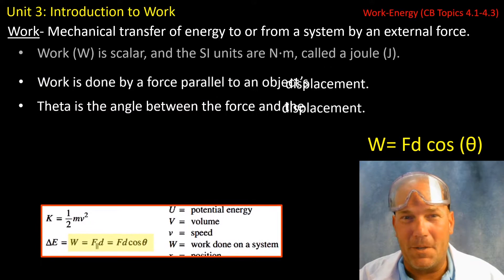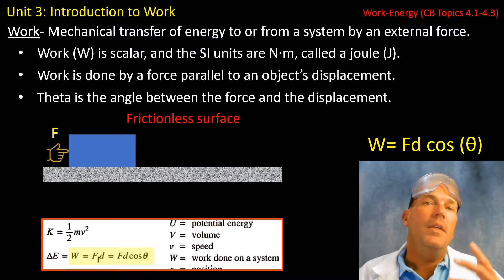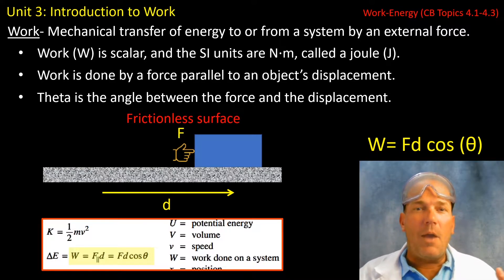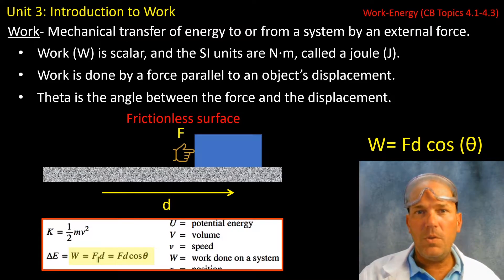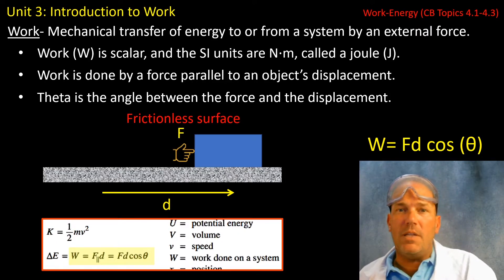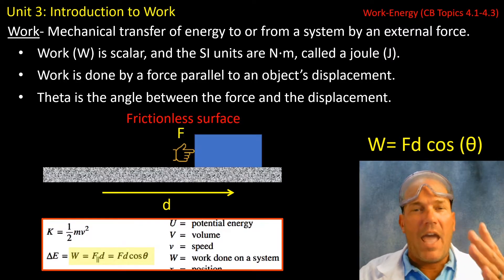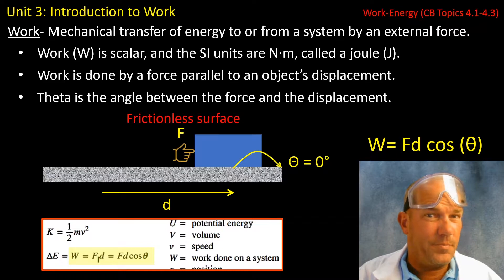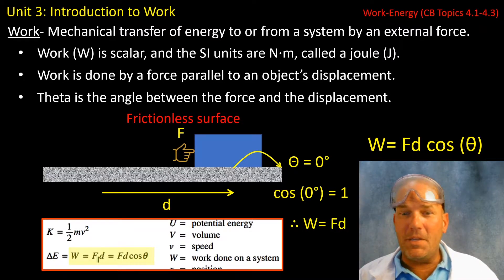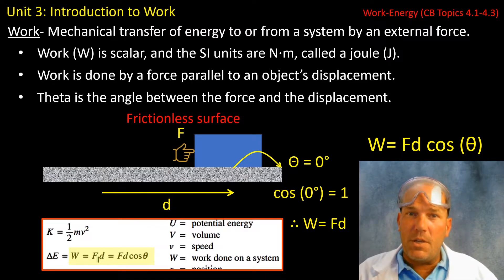Let me show you an example. Here we have an object on a frictionless surface, and a force is going to be applied to this object. This force will accelerate the object a distance d to the right. Notice that the force is to the right and the displacement is to the right — in other words, the force is parallel to the displacement of the object. The angle between the force and the displacement is actually zero, so cosine of zero gives us one, which means work equals force times distance. On your sheet you will see the modulus bars indicating it's the parallel component of the force.